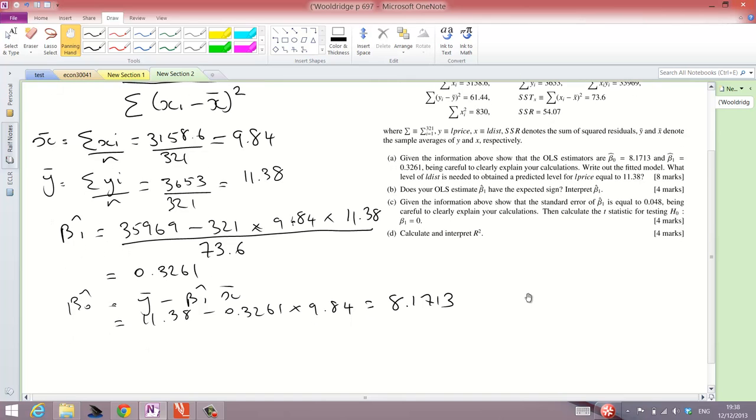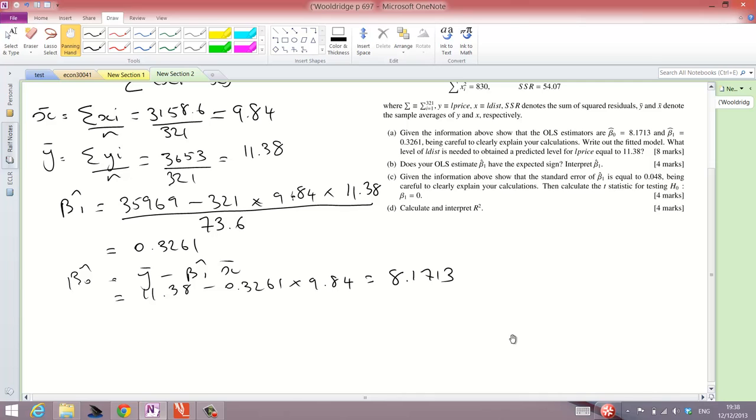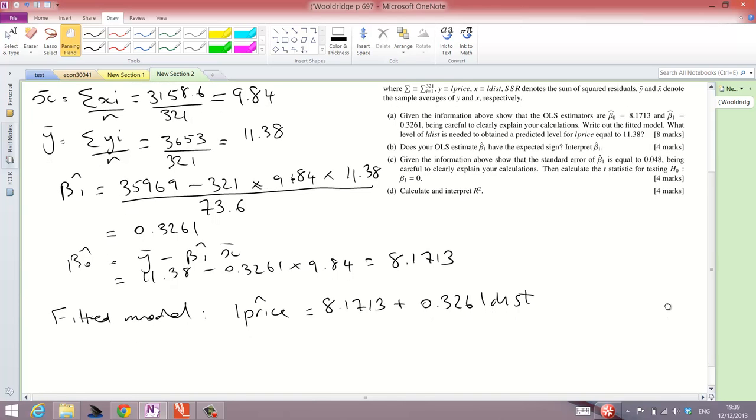Now, the question also asks, write out the fitted model. So, now we have those parameters there. The fitted model is L price hat equals 8.1713 plus 0.326 L dist. So, that's the fitted model.